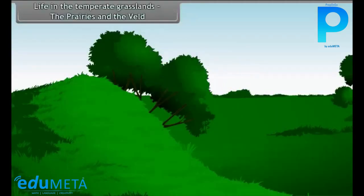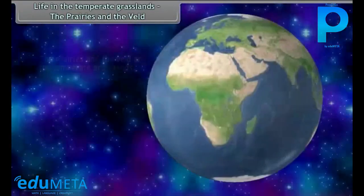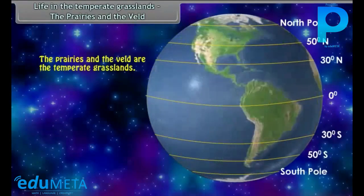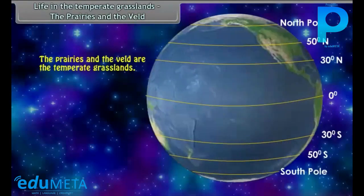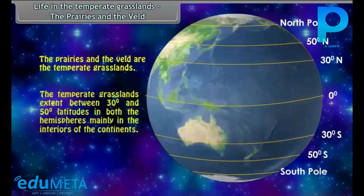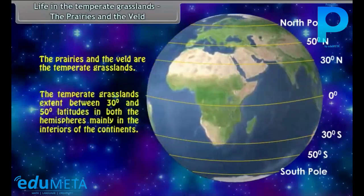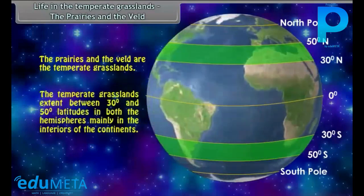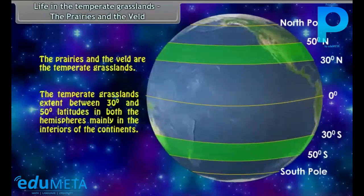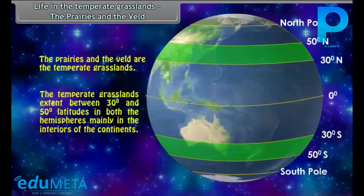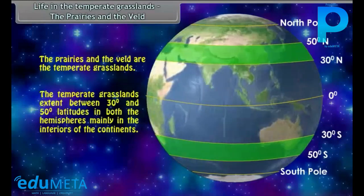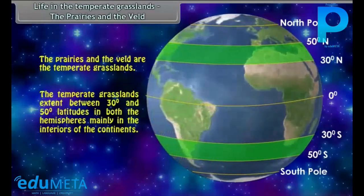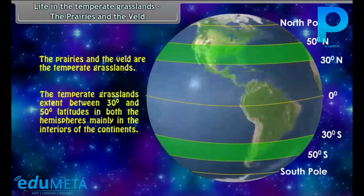Life in the Temperate Grasslands: The Prairies and the Veld. The Temperate Grasslands extend between 30 degrees and 50 degree latitudes in both the hemispheres, mainly in the interiors of the continents.